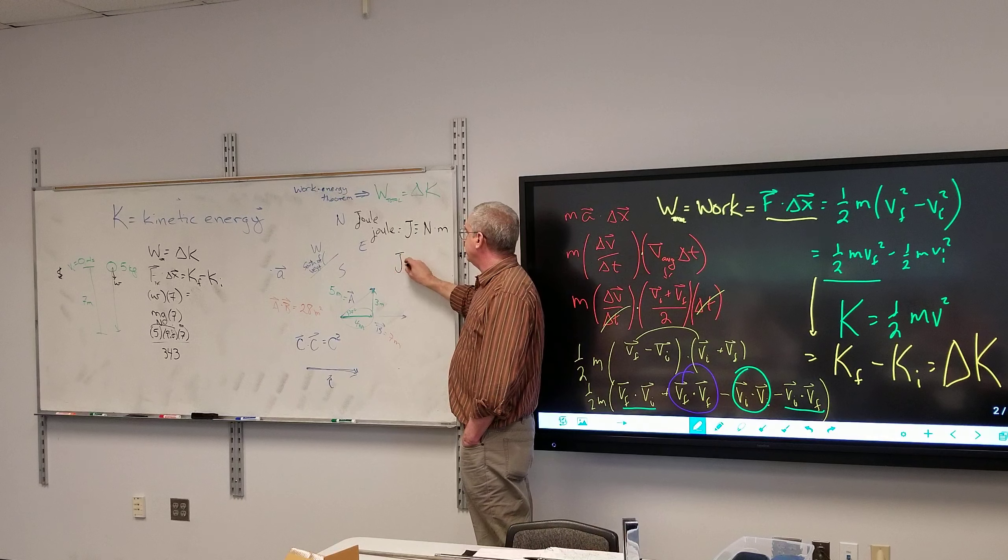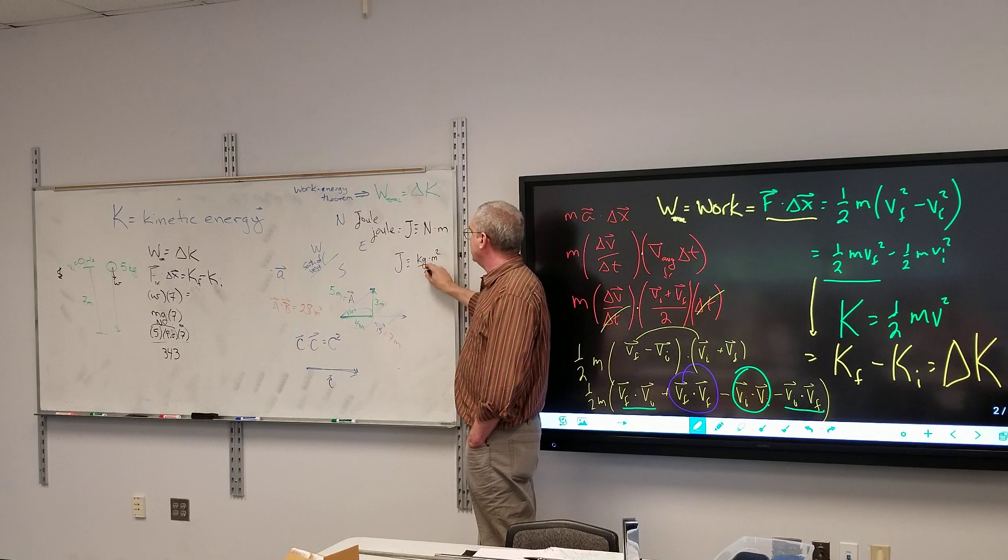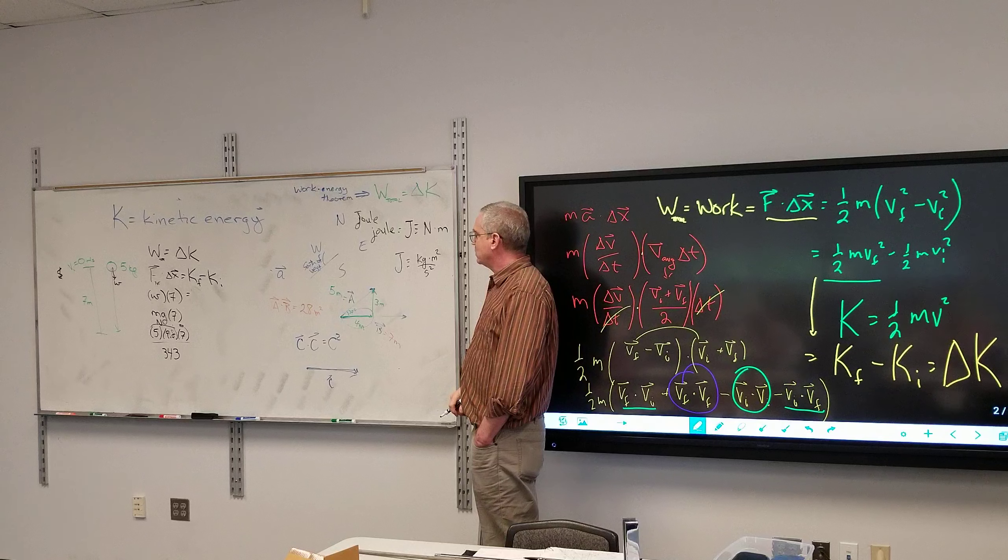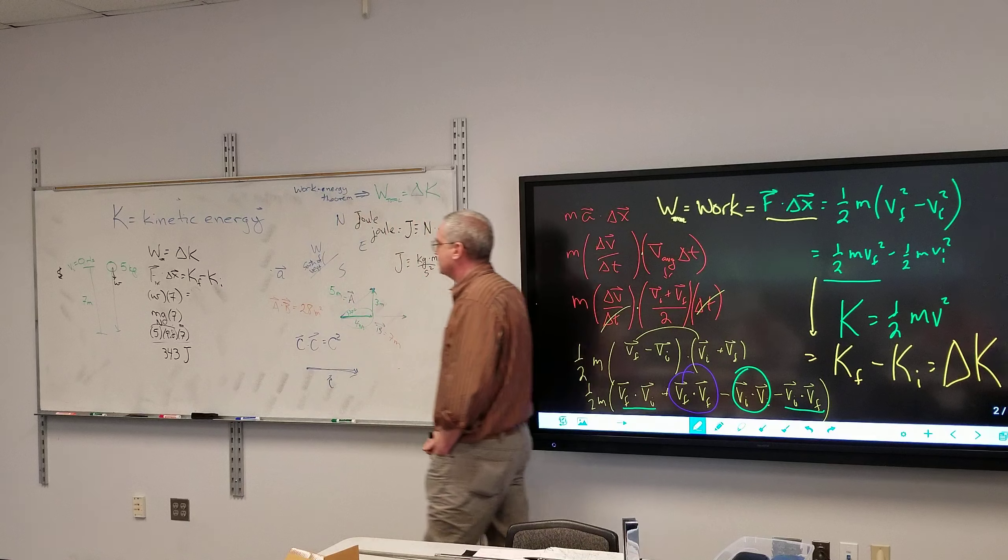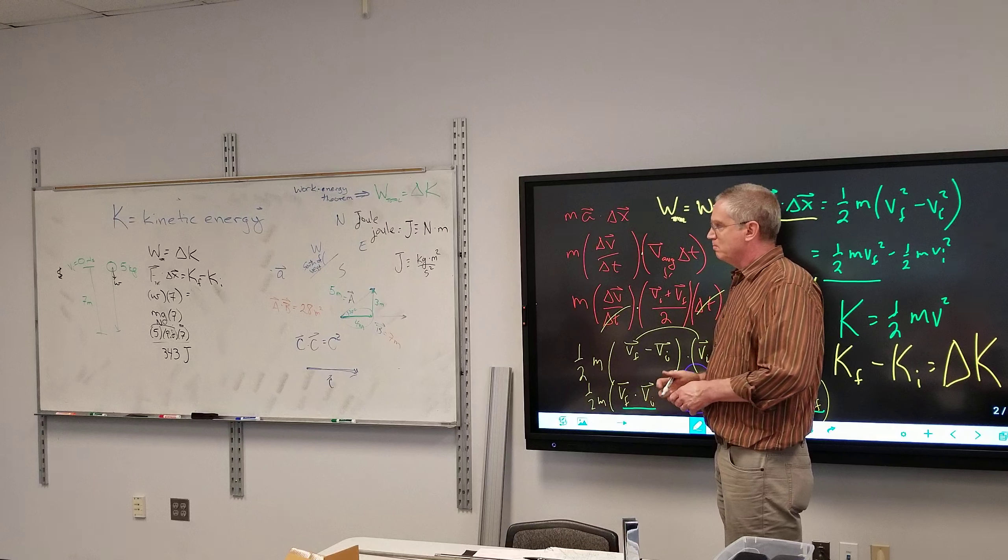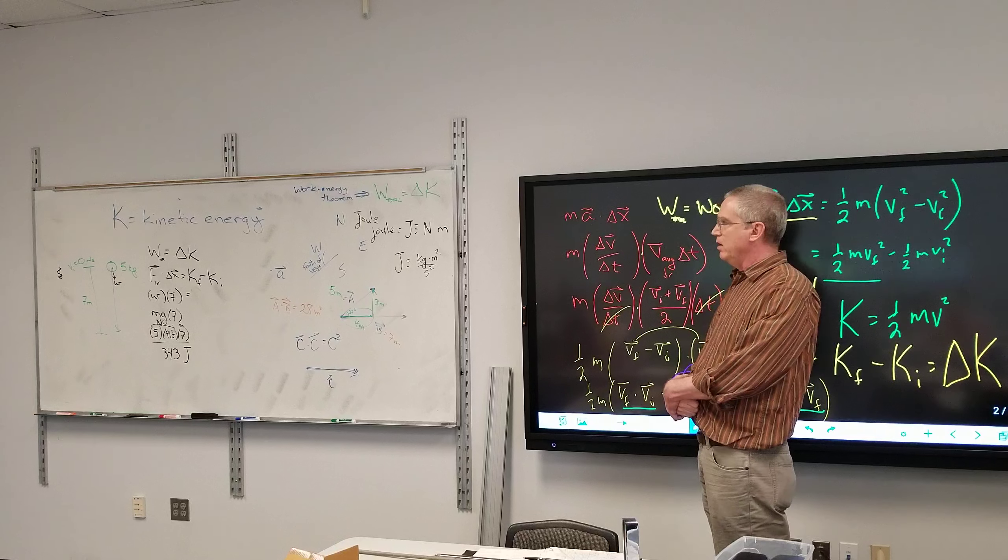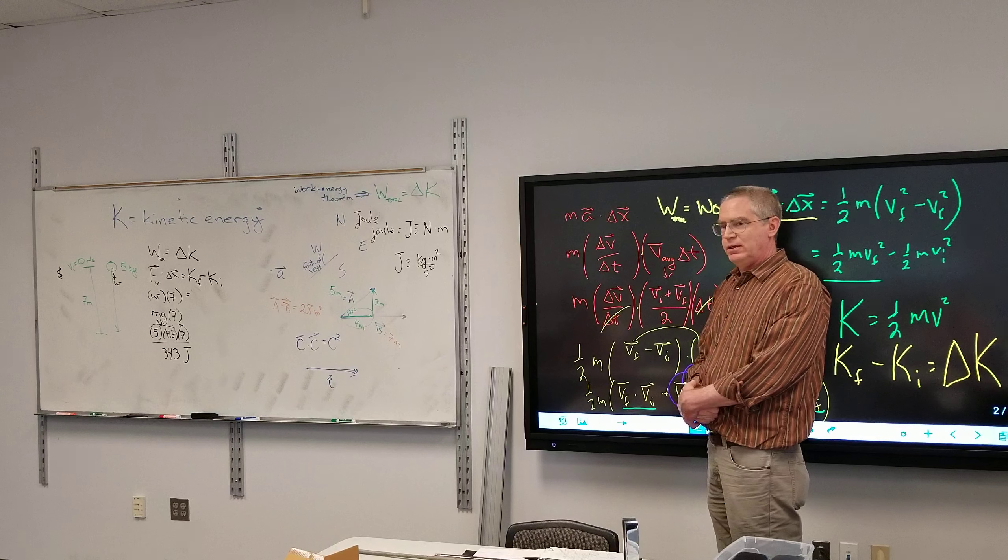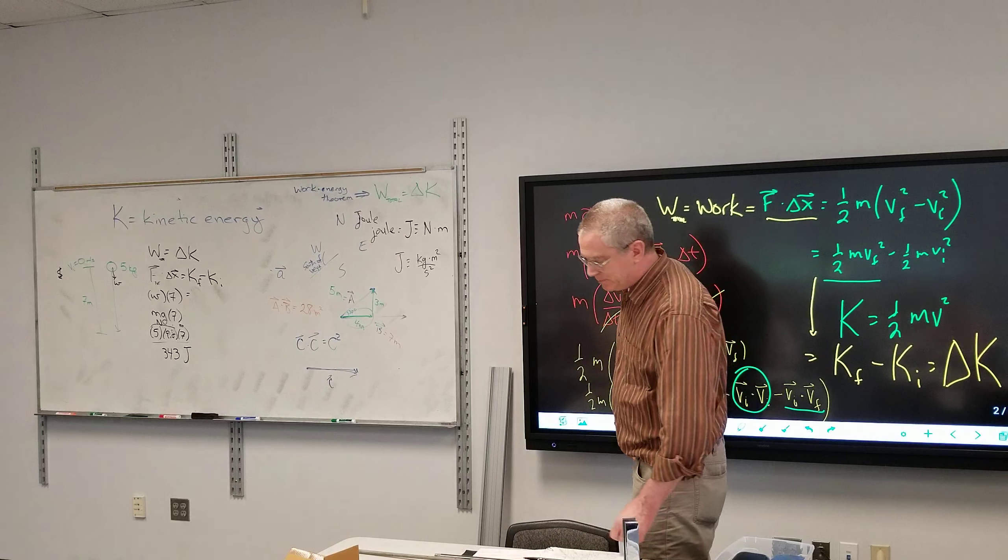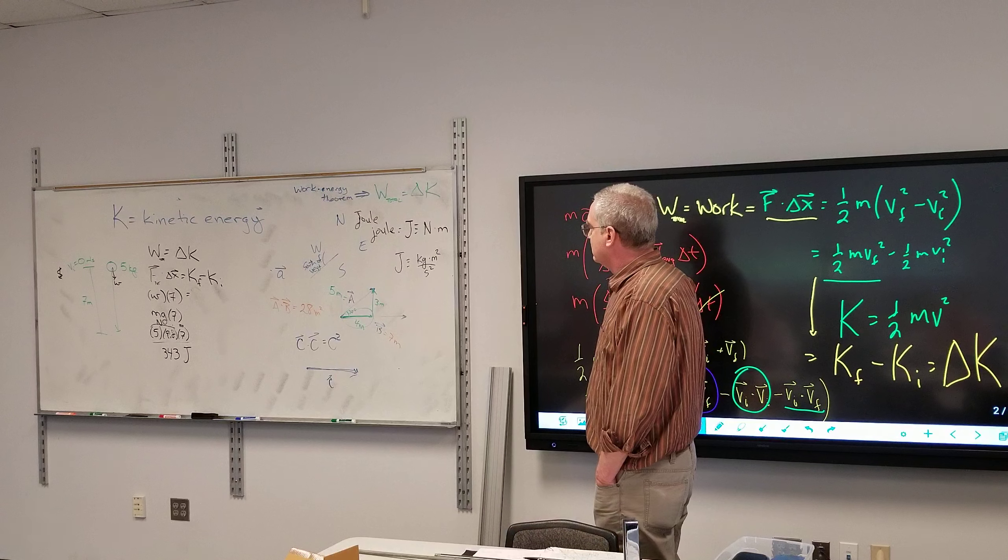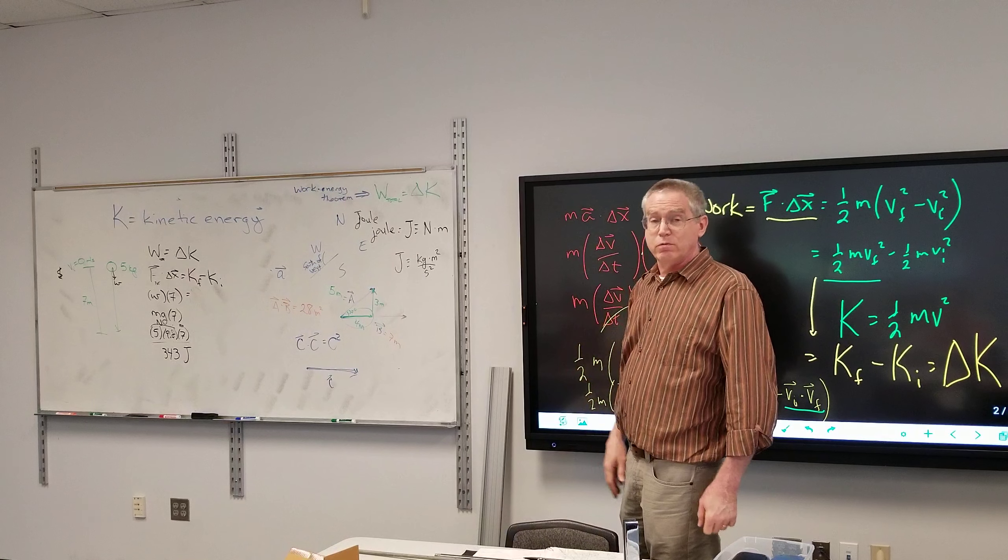Another one of those where you're going how did they come up with this stuff. Capital J, and that's the same as by definition a newton meter, which is the same as a kilogram times meter squared per second squared. So that's 343 joules. That is how much work was done to the object.